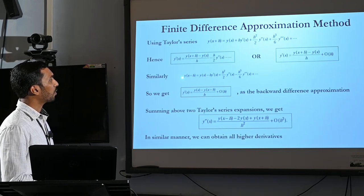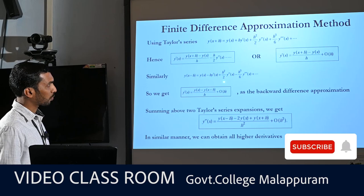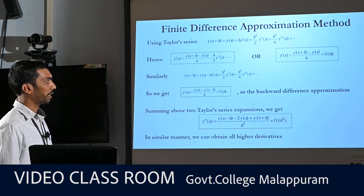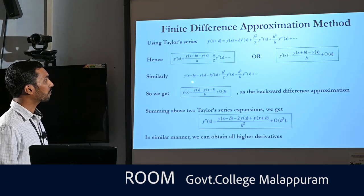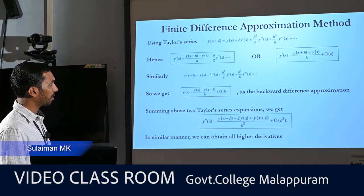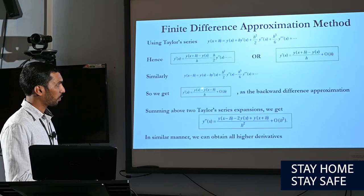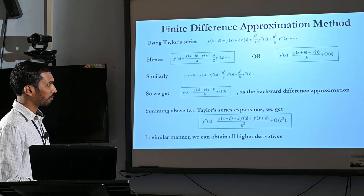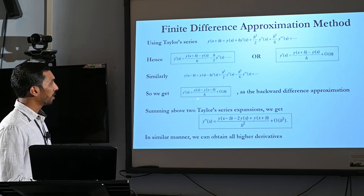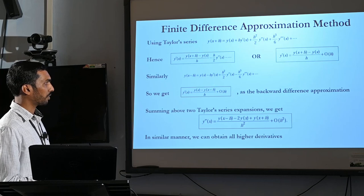Similarly, the expansion for y(x minus h) is: y(x-h) equals y(x) minus h*y'(x) plus h²/2 times y''(x) minus h³/6 times y'''(x), and so on. Rearranging, we get: y'(x) equals [y(x) minus y(x-h)] divided by h, plus errors of order h. This is the finite difference backward difference approximation.